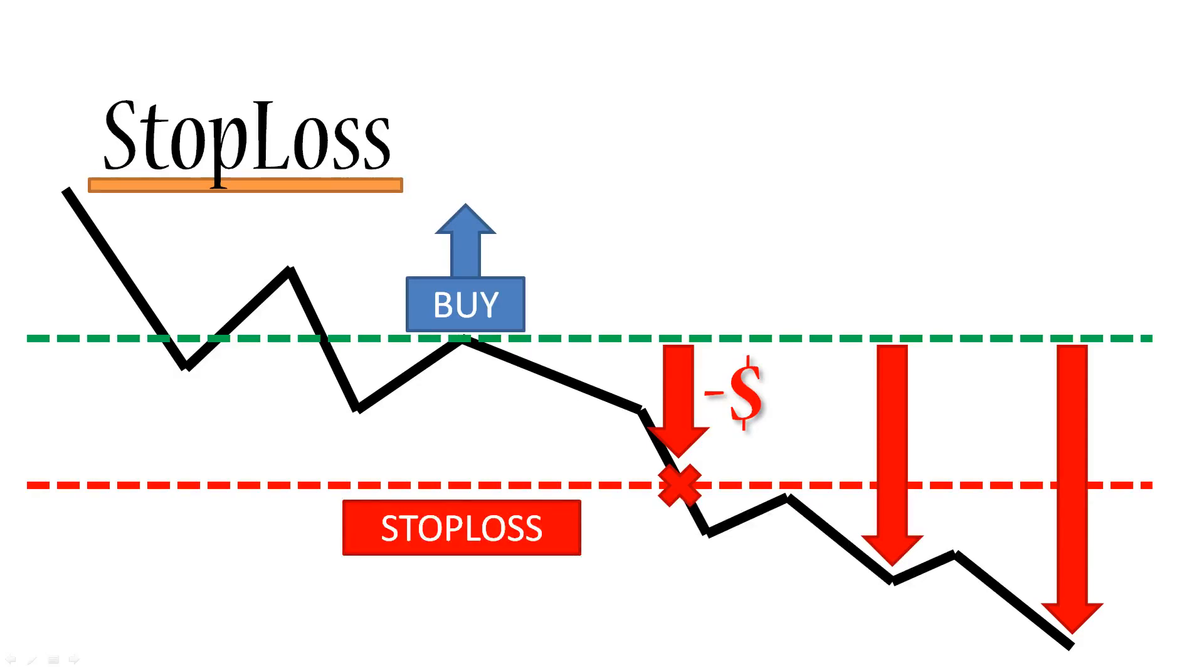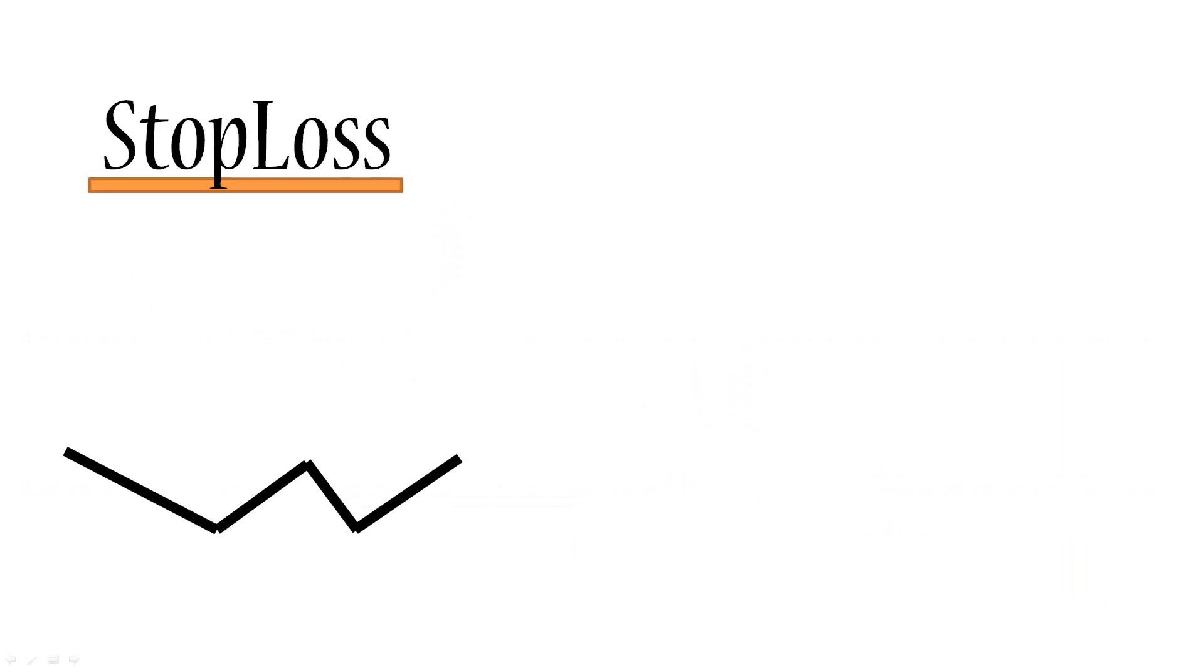Let's look at a stop loss for a sell order. With a sell order, we're anticipating a downward movement in the market. We can set a stop loss which has to be above the entry price and that's because when we anticipate a downward movement, we will only lose if there's an upward movement. Let's see what happens in the market.